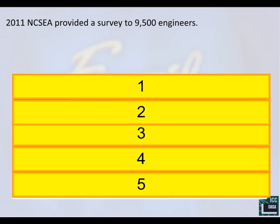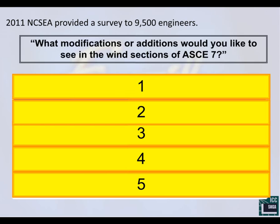There is a more recent survey, and — spoiler alert — a new survey will be coming out in a couple of months. I hope as practicing engineers it finds its way to you, and you can provide input. But in 2011, a survey was provided that asked practicing engineers many questions. The one I want to talk about is: what modifications or additions would you like to see specific to wind design in ASCE 7?